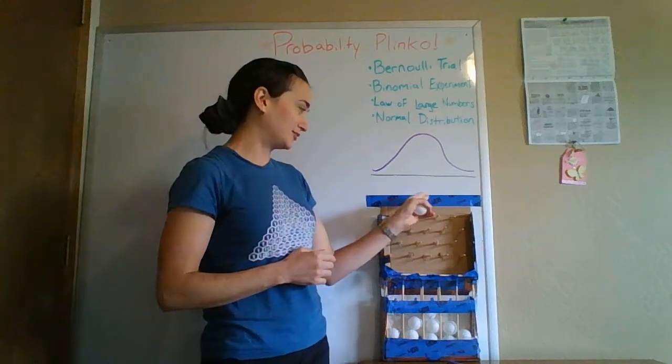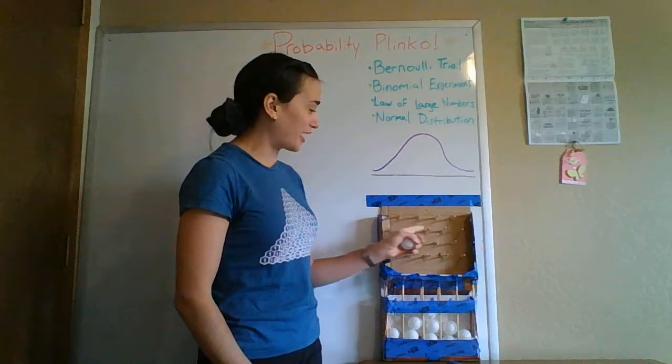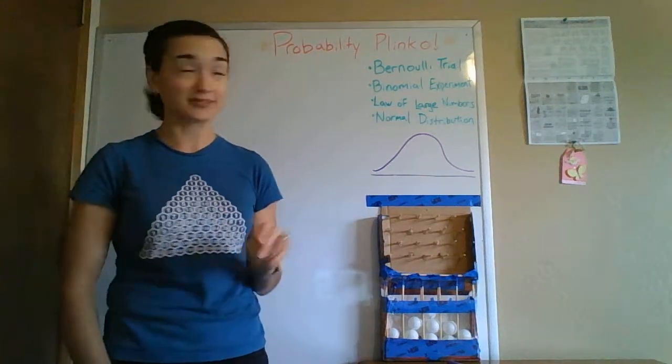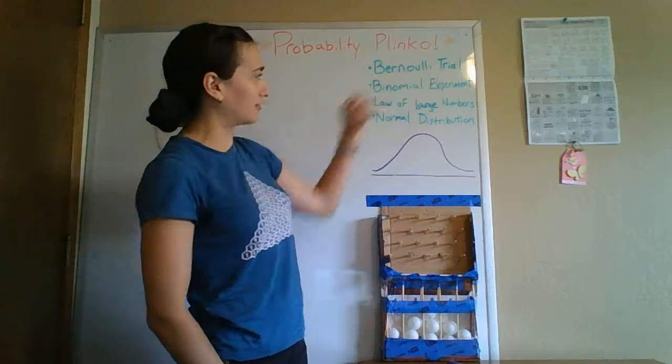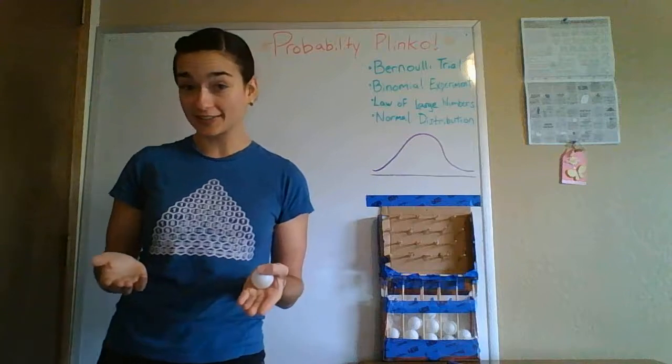Each time the ball drops and lands on a prong, it has to choose either right or left. And when you're doing an experiment that only has two outcomes, that's actually called a Bernoulli trial. Examples of Bernoulli trials are flipping a coin. It can either be heads or tails.